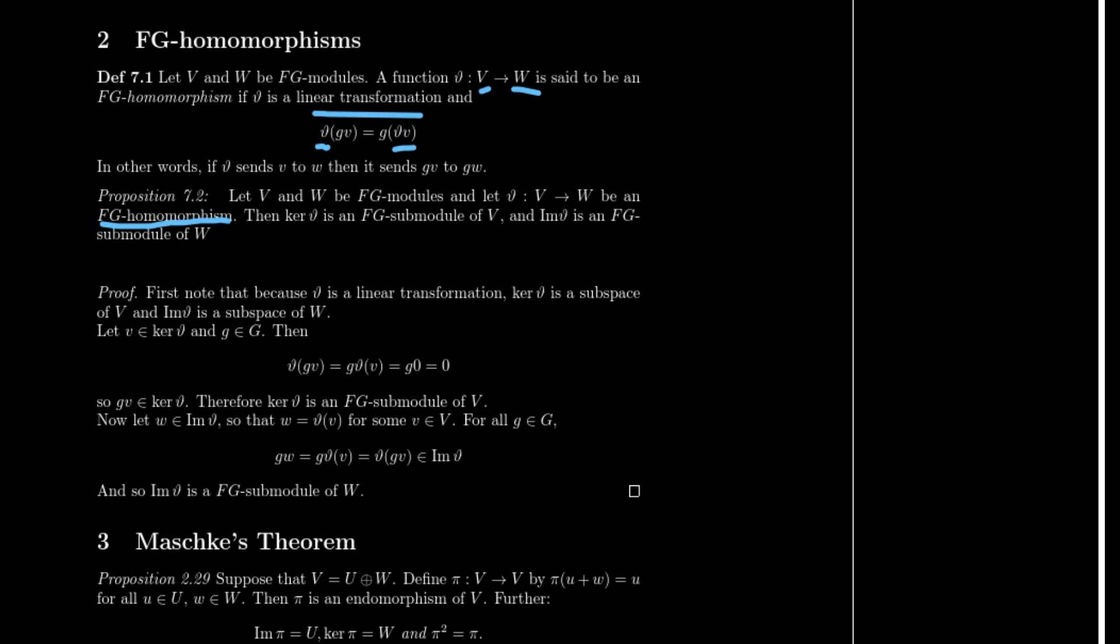So what does this allow us to show? Well, let V and W be FG modules and let θ go from V to W as an FG homomorphism. Then the kernel of θ is an FG submodule of V, and the image of θ is an FG submodule of W. How do we show this? Well, first note that because θ is a linear transformation, the kernel of θ is going to be already a subspace of V, and the image of θ is going to be a subspace of W. So we got that down.